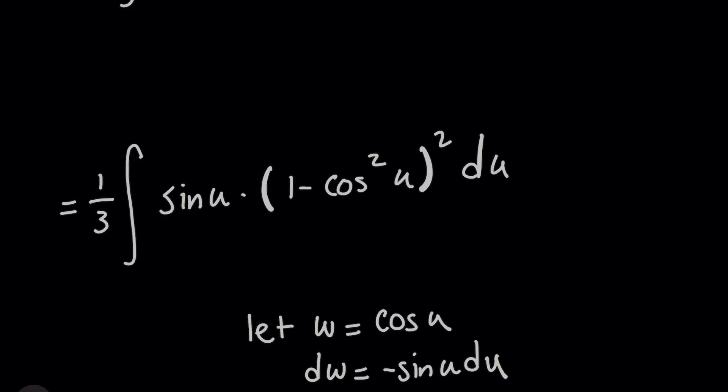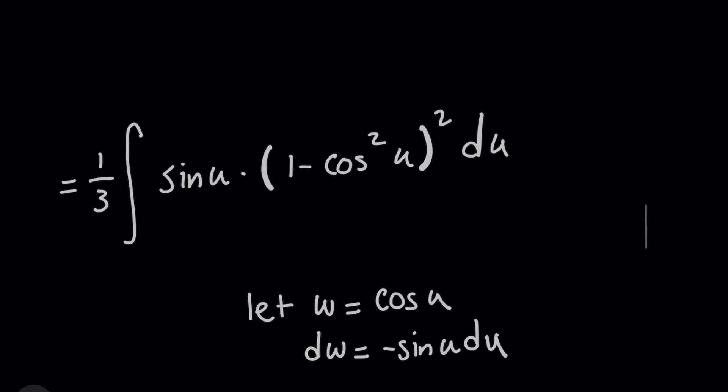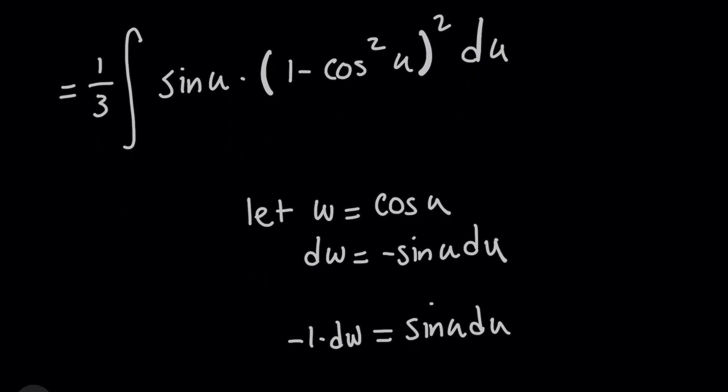And check this out now, there is no rule that says you cannot do a u-substitution more than once on an integral. And we're going to do just that here, because now that you've got this sine of u du all grouped together, and the inner expression here has cosine in it, what we can do now is we can let that inner cosine of u be this new variable w. And then when I take the derivative of both sides, check this out, dw now equals negative sine of u du.